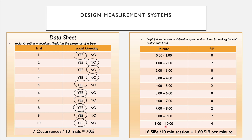On another data sheet, I've divided a 10-minute observation into 10 one-minute intervals and record each instance of SIB. In interval one there was no SIB; in interval two there were two instances; and so forth. At the end of the observation there are 16 instances of self-injurious behavior during the 10-minute session — converted to a frequency, that's 1.6 SIBs per minute.